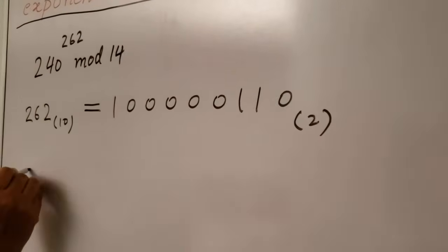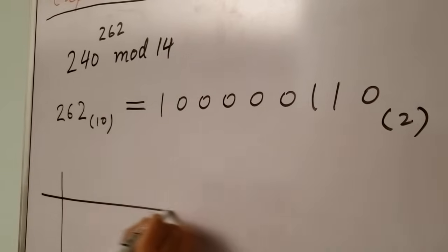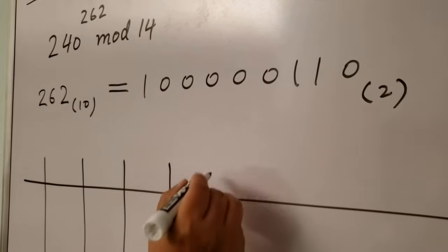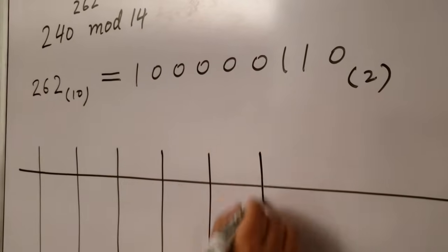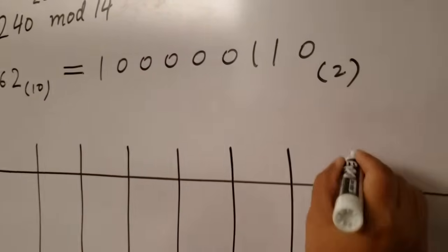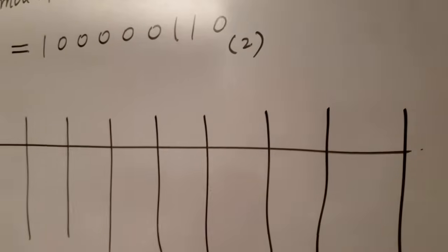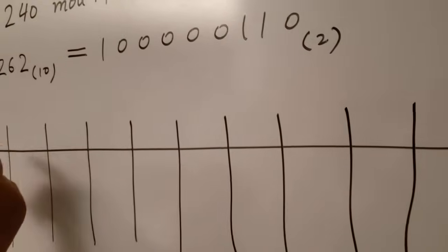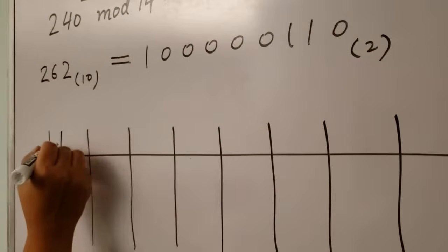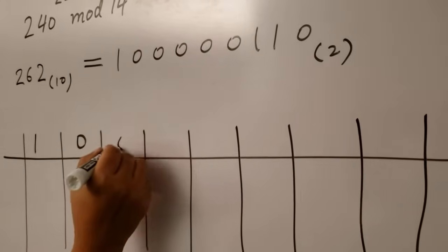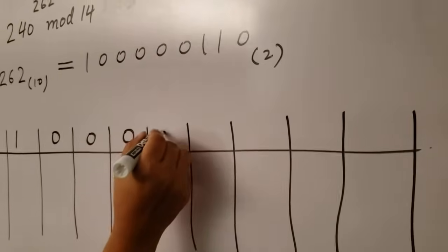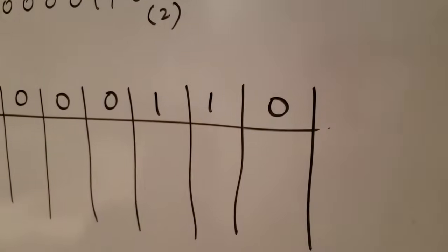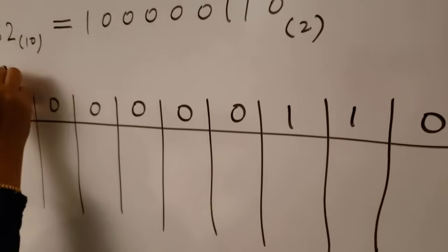Let's draw a table of nine columns and write down each binary digit on top of each column, naming them first, second, third, fourth, fifth, sixth, seventh, eighth, and ninth.